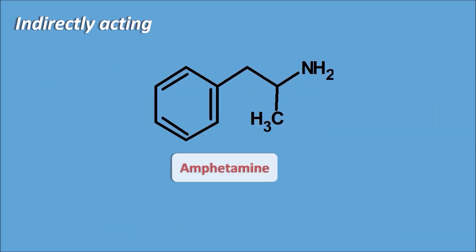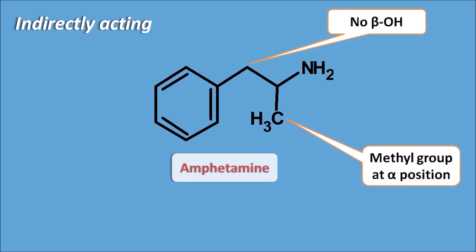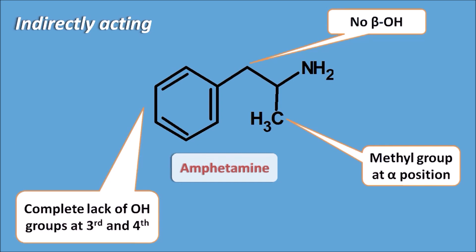Now let us see the indirectly acting agents. Amphetamine has no beta-hydroxyl group but has a methyl group at the alpha position — not on the nitrogen but as a side chain at the alpha carbon. This methyl group introduces a new chiral carbon. Additionally, amphetamine has a complete lack of OH groups at the third and fourth positions.